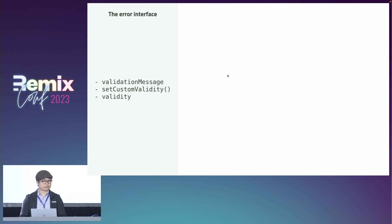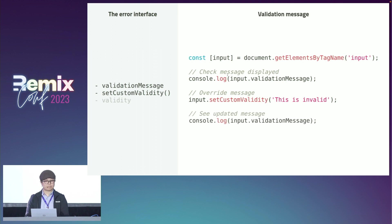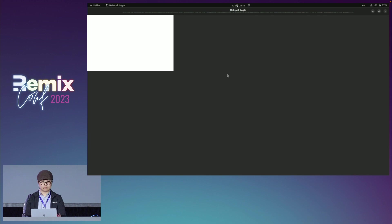Next, we need to learn about the error interface. First, the error message displayed is defined by the validationMessage property. It can be overwritten with the...